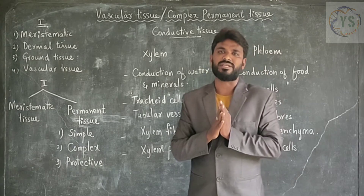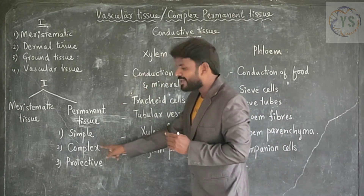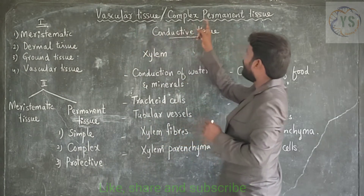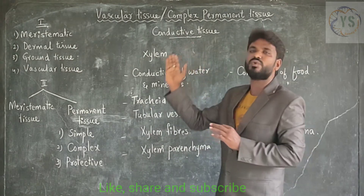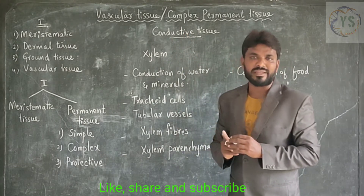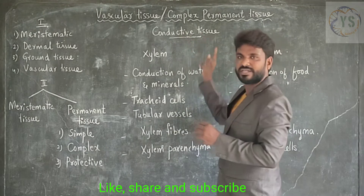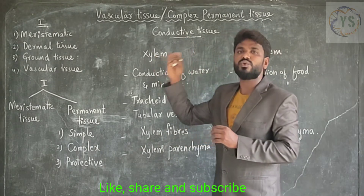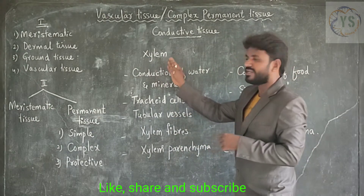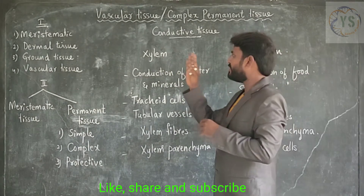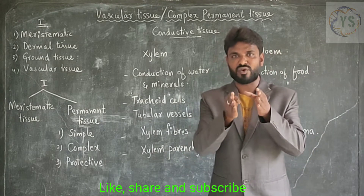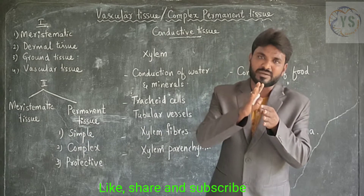We are going to talk about complex permanent tissue or vascular tissue. Vascular tissue is one kind of plant tissue. It helps in conduction of water, food material, and minerals, so it is also called conductive tissue. This conductive tissue or vascular tissue is divided into two kinds internally: xylem and phloem. Both xylem and phloem together form the vascular bundle.